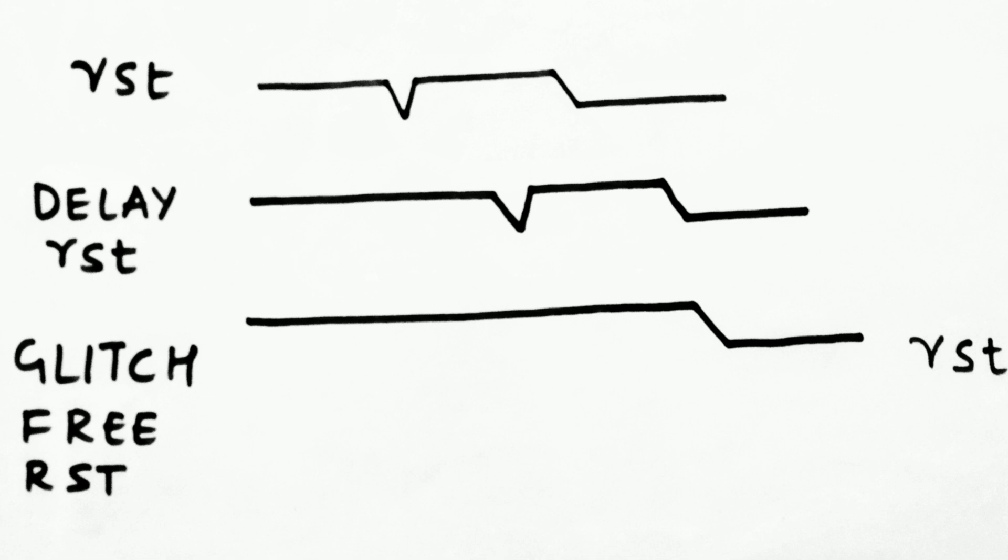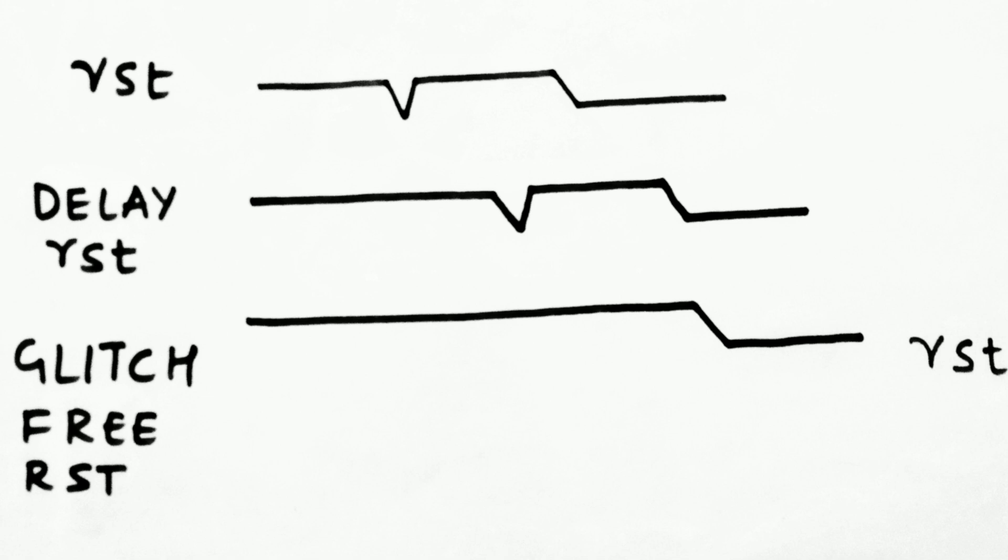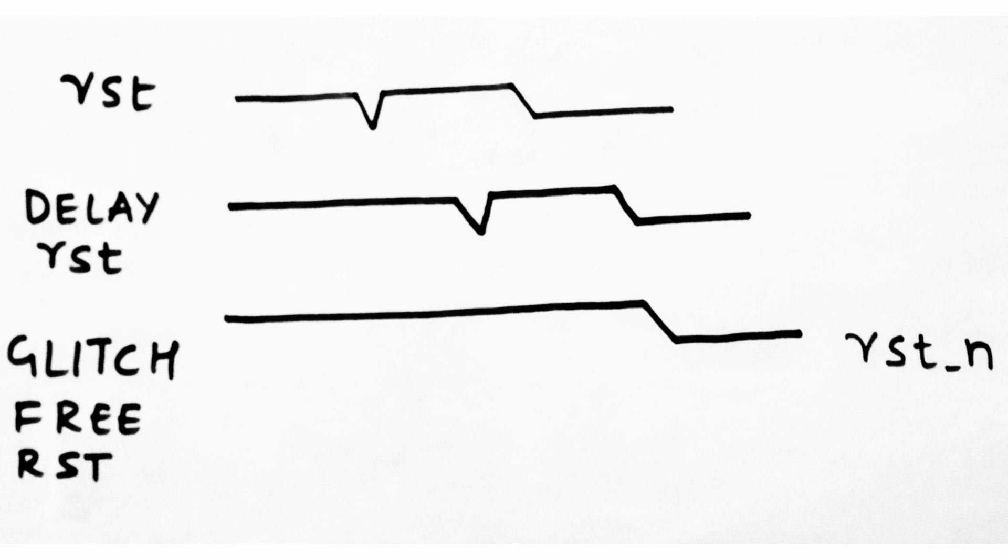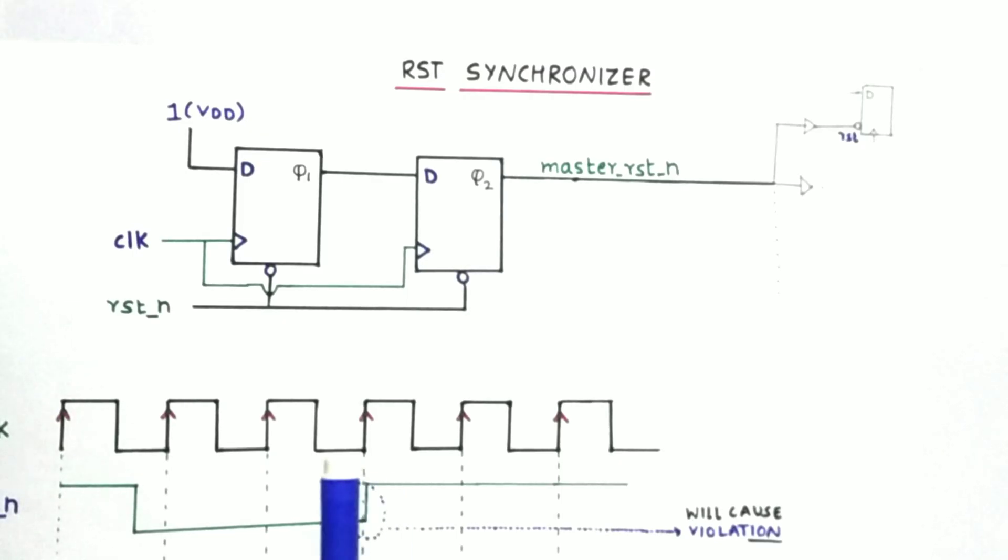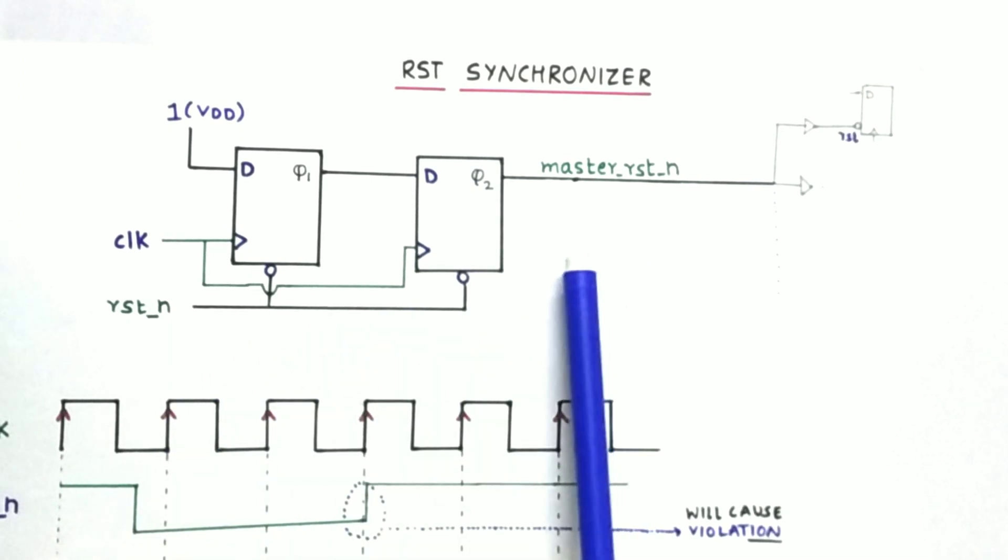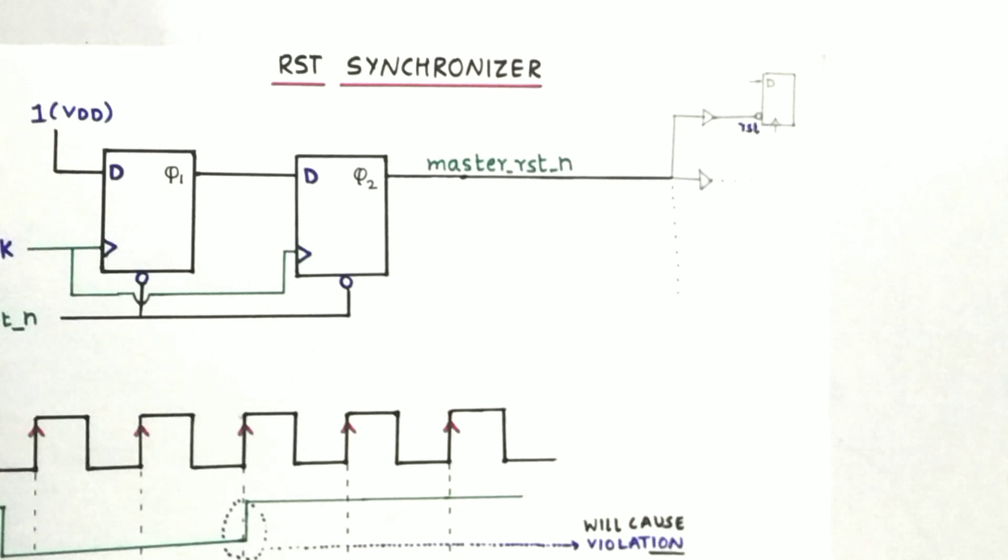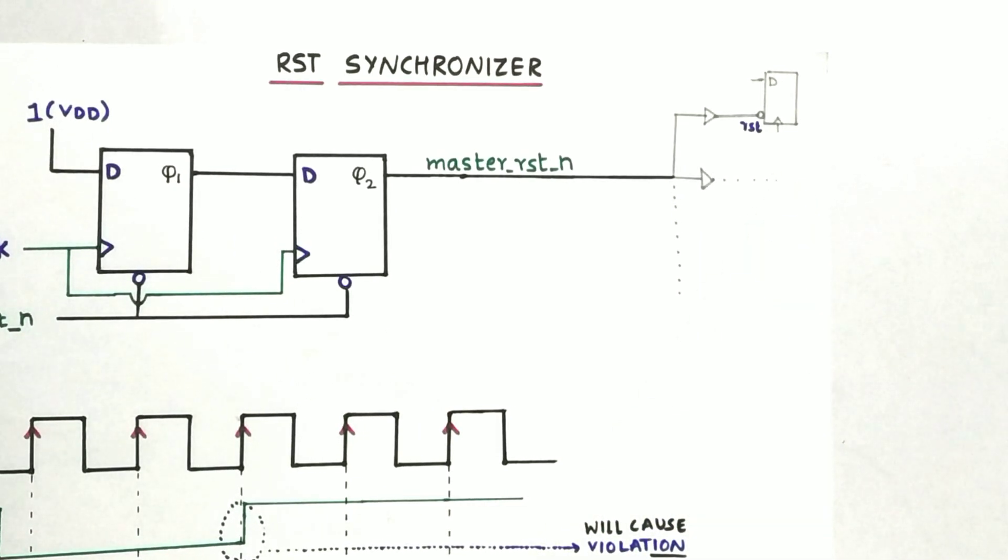So there can also be glitches of reset. To avoid glitches, we use an AND gate logic where we delay our reset and add it with the original reset so that there won't be any glitches in the reset. Then it will be supplied to the reset synchronizer and this reset which is synchronized will be given to the design. So there is a dedicated pin for the reset while using the asynchronous reset.